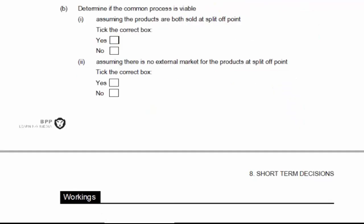In part B, we've got to determine process viability. We're going to make two different assumptions. In part one, we're assuming the products are both sold at the split off point. In part two, we're assuming that they can't actually be sold at that point. They have to be further processed.